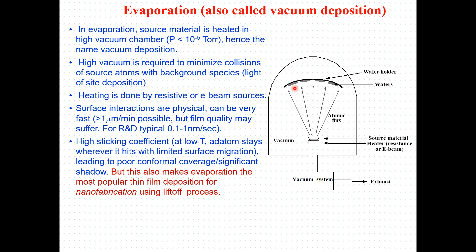Once you heat up the source material, the vapors are accelerated toward the substrate. The surface interactions in evaporation are physical. The deposition rate can be greater than one micron per minute, but film quality may suffer at higher rates. For R&D purposes, the typical deposition rate is in the range of 0.1 to 1 nanometer per second.